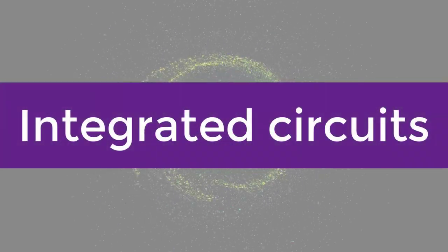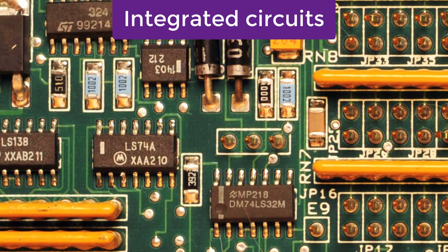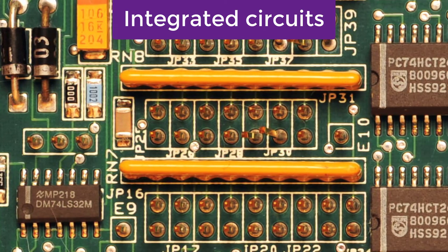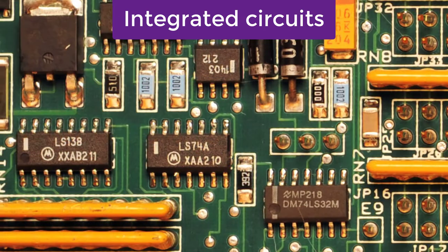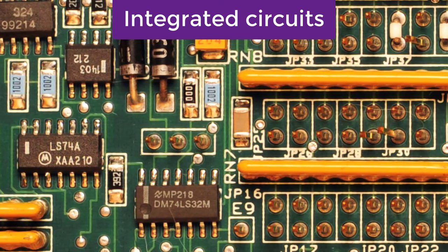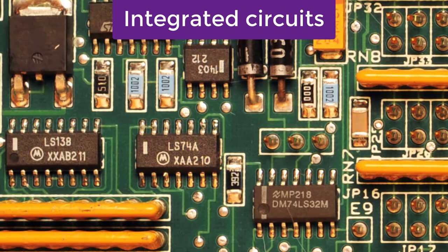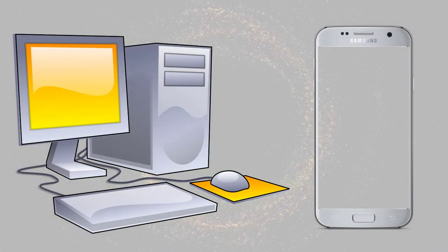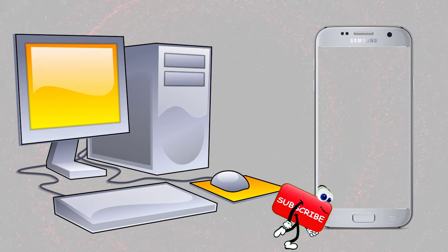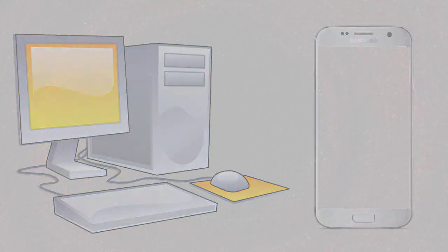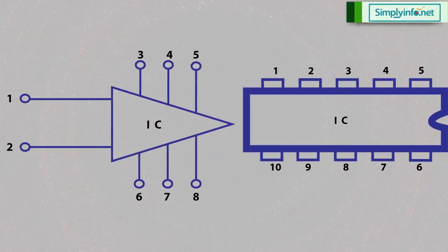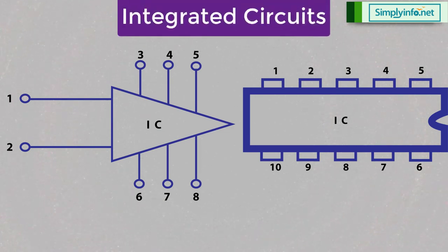Integrated Circuits. An integrated circuit is a special component which is fabricated with thousands of transistors, resistors, diodes, and other electronic components on a tiny silicon chip. These are the building blocks of current electronic devices like cell phones, computers, etc. These can be analog or digital integrated circuits.